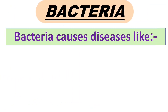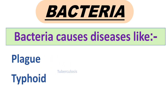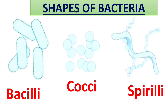First, we will look at bacteria. Do you know a fact about bacteria? Bacteria were among the first life forms to appear on the earth. Bacteria cause diseases like plague, typhoid, tuberculosis, pneumonia, and meningitis. Bacteria have a number of shapes ranging from spheres to rods and spirals, as you can see in this picture.